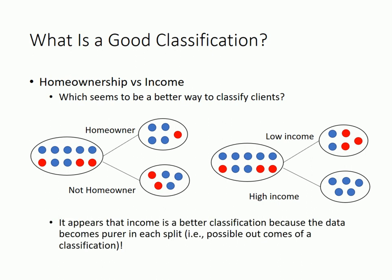It appears that income is a better classification because none of the clients default in the high-income case. We say that the high-income split is 'pure' because every client in that group has the same outcome. On the other hand, the low-income split and both splits of home ownership are not pure because the clients do not show the same outcome. A pure split is always preferred because it means that the split is meaningful. For example, classifying clients by income tells you that high-income clients do not default, but categorizing clients by home ownership does not really tell much about whether a client would default, as homeowners and non-homeowners have a similar chance of defaulting.